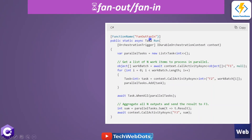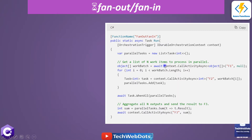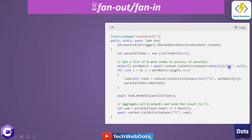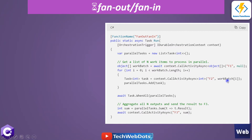Now let's look at the code. We create a durable function called FanOutFanIn, and we use the context object — as used in previous sessions — to call activity functions. First we call f1, which returns a workbench of objects, maybe five items. Then we loop through the length of the workbench, each time calling function f2, which returns an integer value. You can perform any operation you want here.